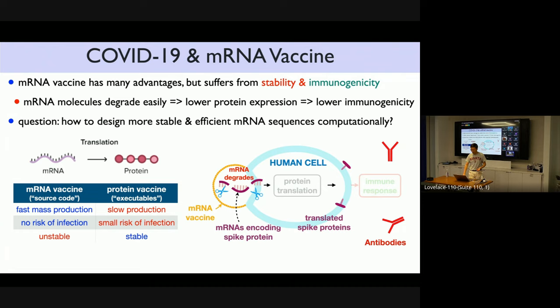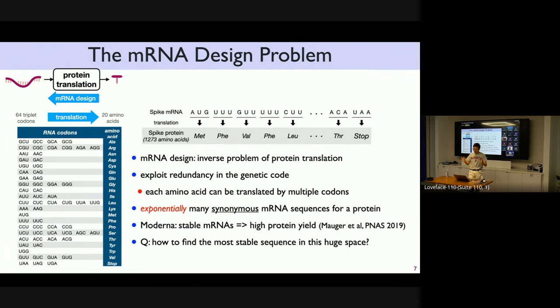As we all know now, mRNA vaccines are great, much better than traditional protein-based vaccines, because it gives you source code, not the executables. Your cells are responsible to translate the source code, that is the mRNA, into the executables that are the proteins. For example, you want to translate into the spike protein of COVID, which would induce antibodies. But although mRNA vaccines are much better than protein in many features like fast mass production, no risk of reinfection, there's a catch. The catch is RNAs are very unstable compared to proteins or DNAs.